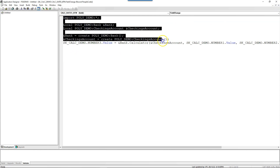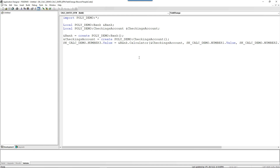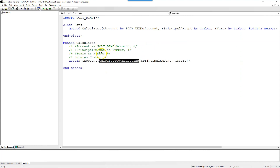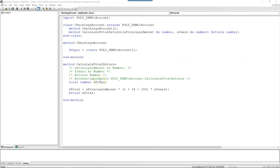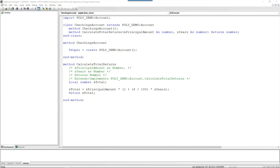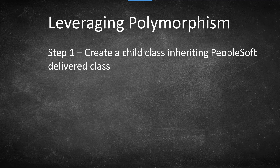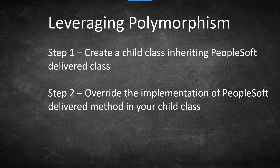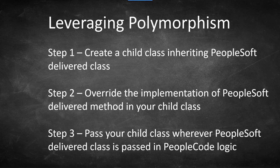Basically we are not changing the interface of the core logic, but we changed the behavior of the method by implementing the same method inside the child class, overriding the logic defined in the parent class. The key takeaway is: if you want to enhance the functionality of a PeopleSoft application leveraging polymorphism, you have to perform three steps. Step one: create a child class inheriting a PeopleSoft delivered class. Step two: override the implementation of the PeopleSoft delivered method in your child class the way you want to change the behavior. Lastly, pass your child class wherever the PeopleSoft delivered class is passed in PeopleCode logic.